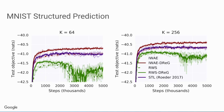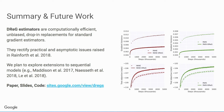In summary, doubly reparameterized gradient estimators are computationally efficient, easy to implement, cost the same as previous estimators, unbiased, and have lower variance. We suggest using them instead of typical estimators. They rectify practical and asymptotic issues raised in recent work by Tom Rainforth. We plan to explore extension to sequential models in future work. The extended paper, slides, and code to reproduce all experiments are available on our website.